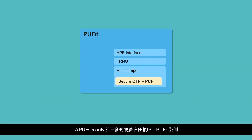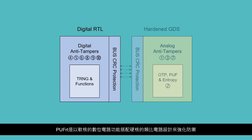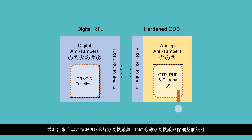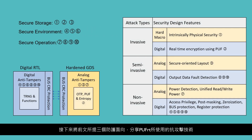Take Puff Security's hardware root of trust IP, PuffRT, as an example. PuffRT's anti-tampering design combines both digital function (soft macro) and analog design (hard macro) to defend against attacks, which integrates quantum tunneling PUF's native chip fingerprint and true random number generator (TRNG) with secure OTP, and combines the static random number from PUF with a dynamic random number from TRNG to protect the whole design.